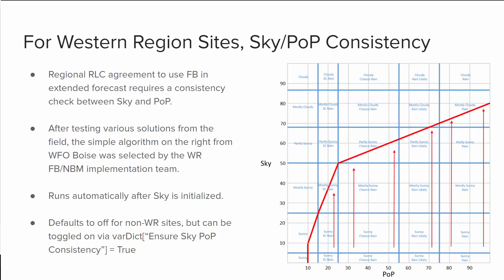Finally, this applies only to western region sites: a sky/POP consistency check. This was due to their regional RLC agreement to use Forecast Builder in the extended range, essentially allowing POP and sky to be semi-consistent. As your POP increases, so does your sky along a certain curve. This algorithm was developed from WFO Boise.